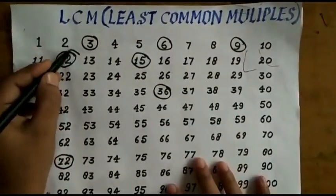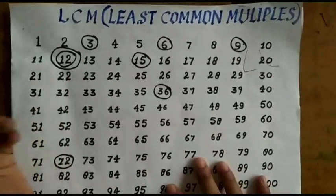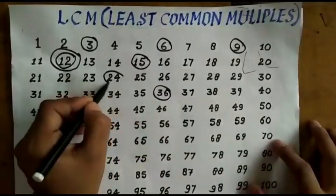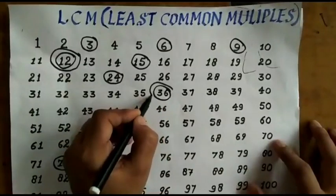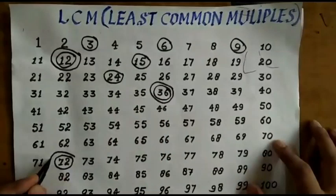And next we will select multiples of 12. So 12, 24, 36 and also 72.